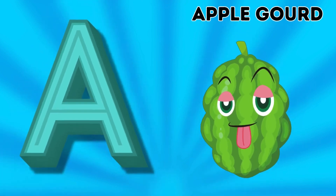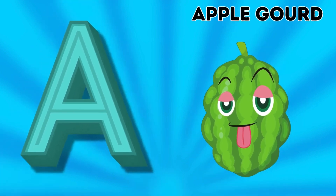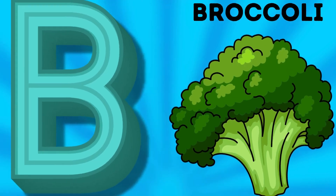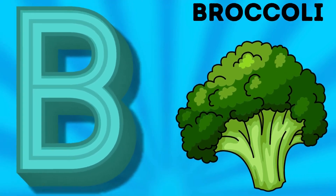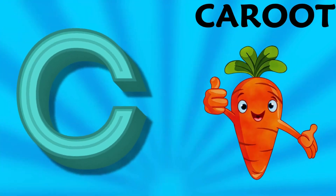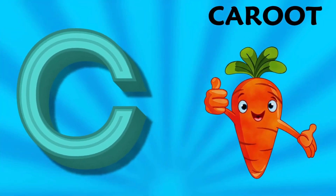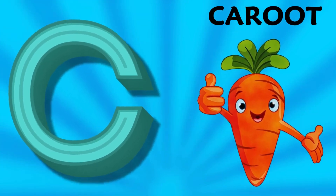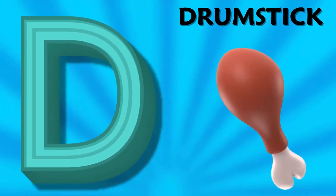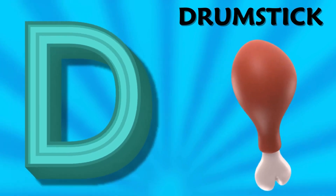A is for apple gourd, apple gourd. B is for broccoli, broccoli. C is for carrot, carrot. D is for drumstick, drumstick.